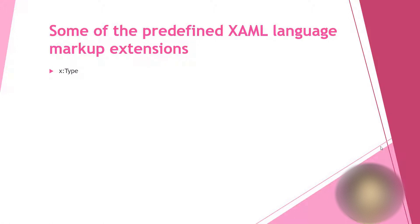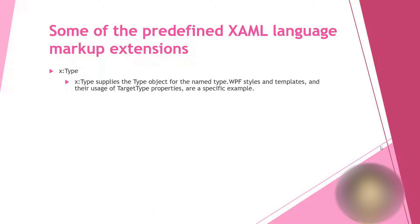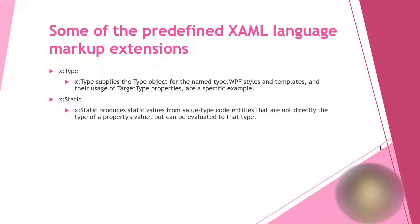x:Type markup extension supplies the type object for a named type. WPF styles and templates and their usage of the TargetType property are a specific example of this. x:Static produces a static value from value-type code entities that are not directly the type of the property value but can be evaluated to that type.